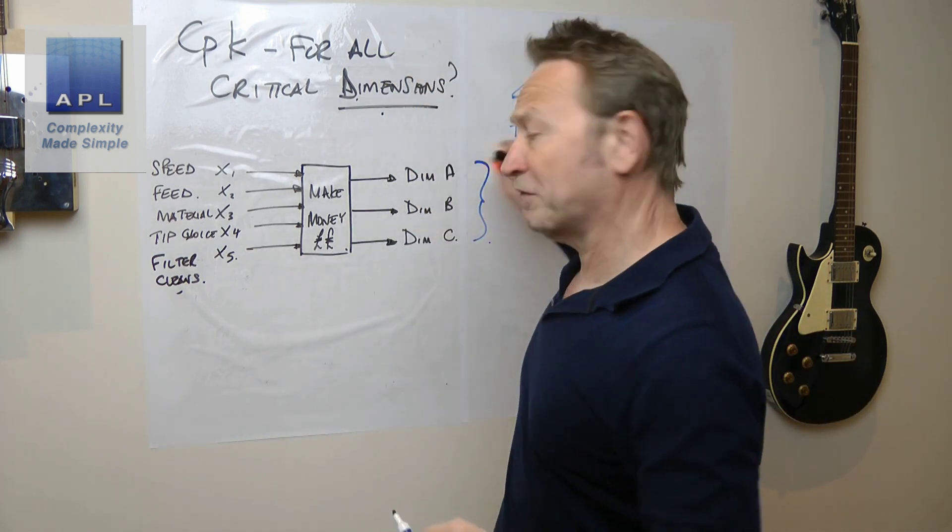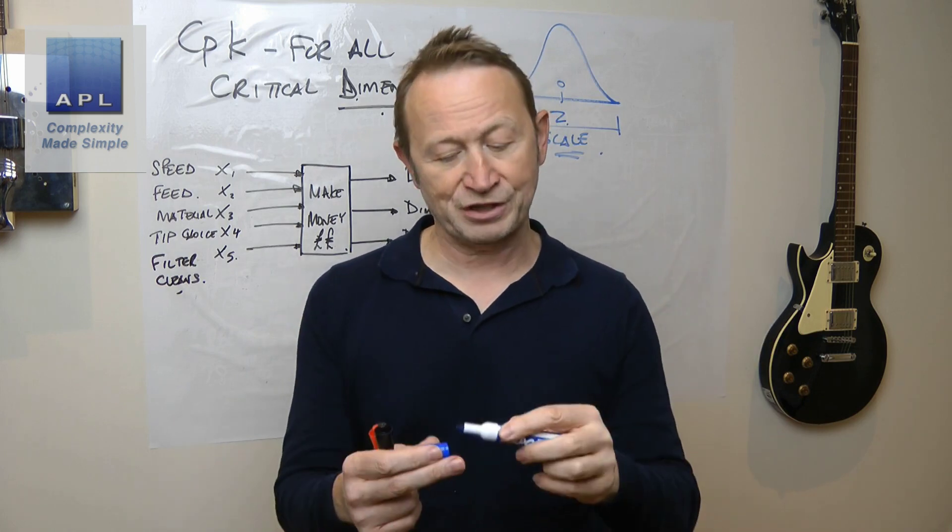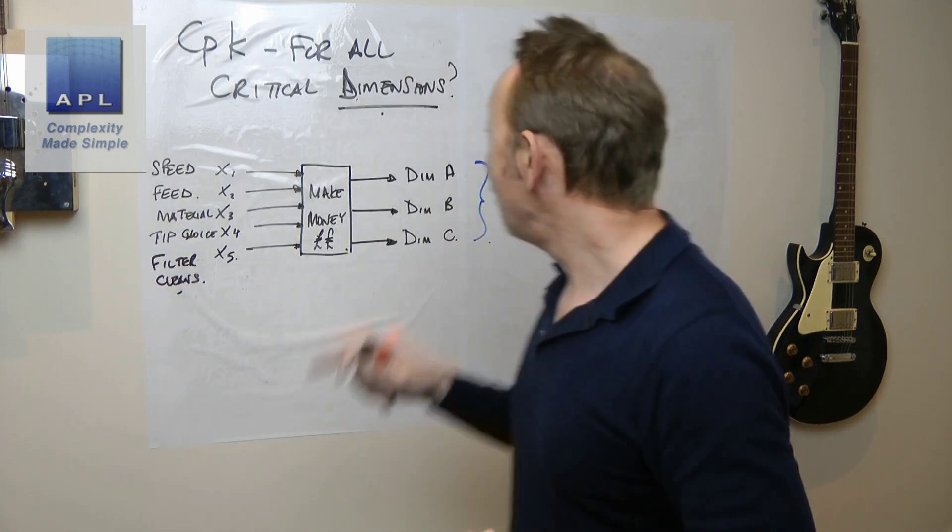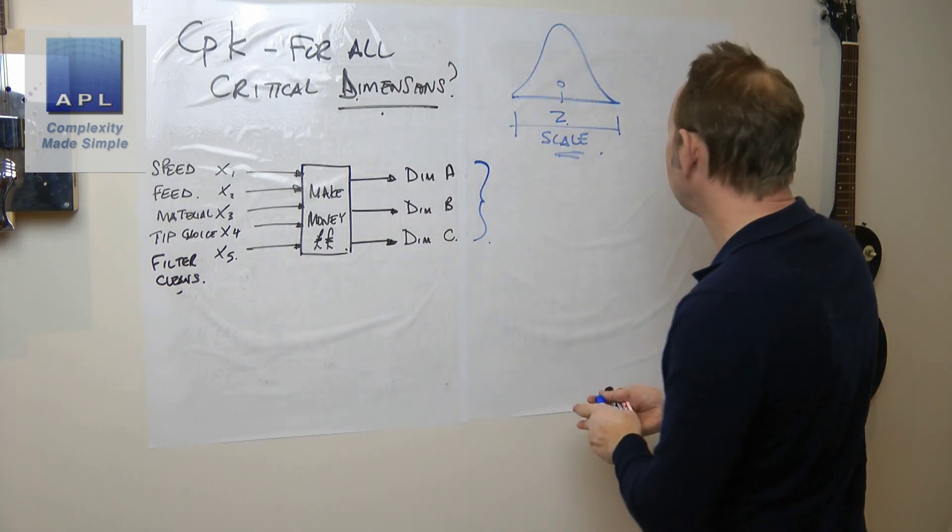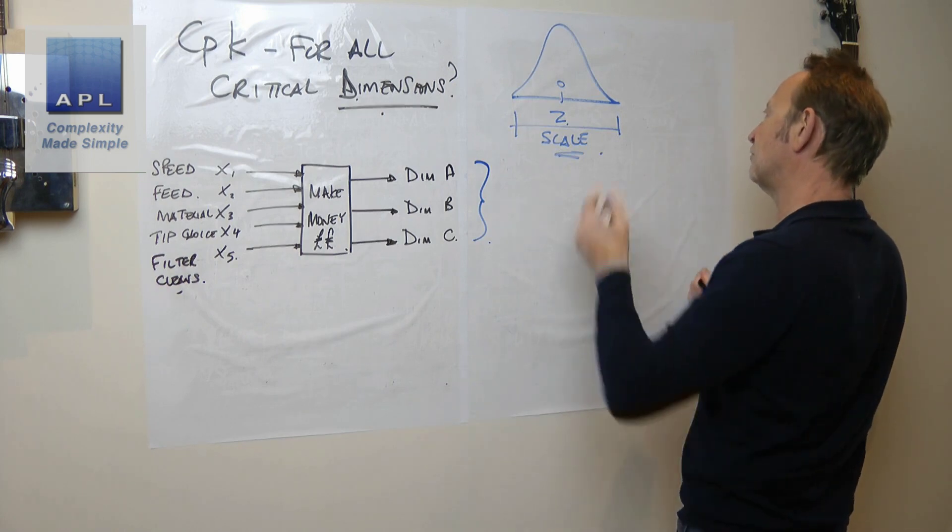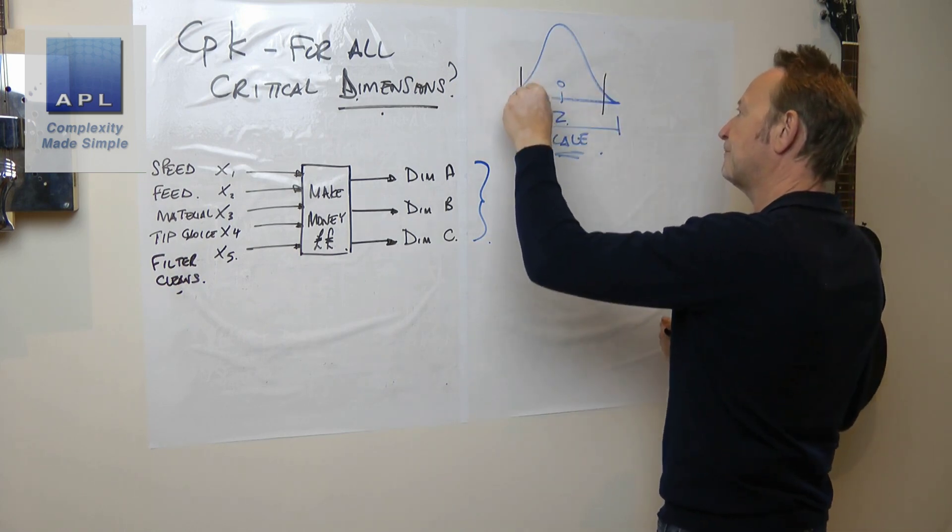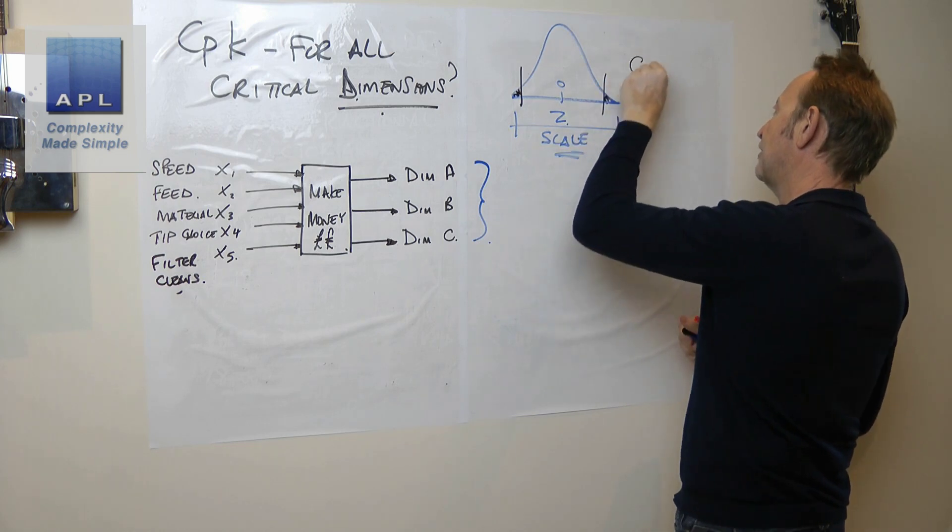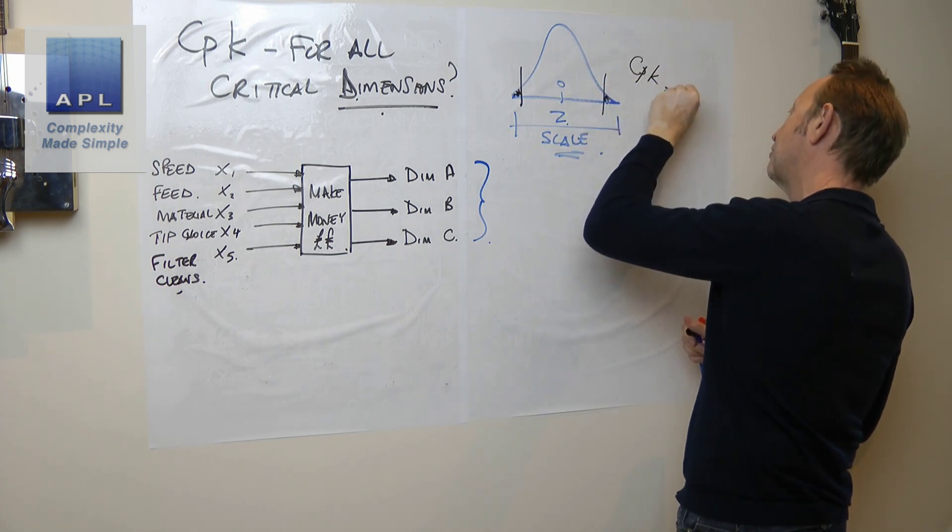You could do some fancy statistical calculation, jumble it all up, and put it all into one CPK calculation. Let's say you got a CPK of 0.93.